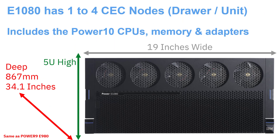The E1080 has one to four of these CEC nodes. CEC is Central Electronics Complex. Some people call them CPU drawers or units — they're all the same thing. It includes the Power 10 CPUs, the memory and the adapters. 19 inches wide should not be a surprise. 5U high and it's 34.1 inches deep, the same as the Power 9 E980, the model that preceded it. This is quite a long drawer — people with Power 9s often had to buy a rack extension out the back to allow the cabling room to turn.